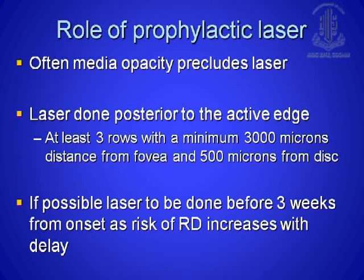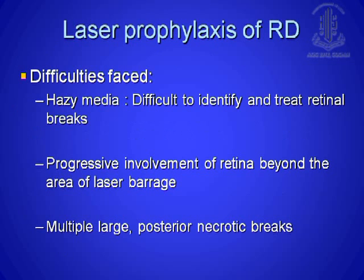Laser is a little difficult in this situation because there is a lot of vitreous reaction and media opacity precludes laser. But if you are able to do it, you do at least three rows behind the active retinitis, at least 2,000 microns from the fovea and 500 microns from the disc. It is usually done in the first three weeks of the disease. The difficulties are: hazy media makes it hard to treat, there are large posterior breaks, and the retina progressively involves even the laser areas.